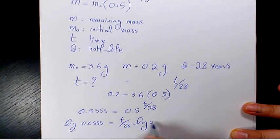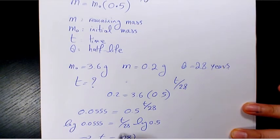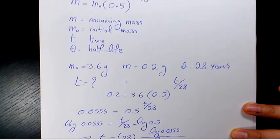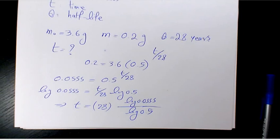So T will be 28 times log 0.0555 divided by log 0.5. So let's calculate it: log 0.0555 divided by log 0.5 multiply by 28, that's going to give me 116.8.